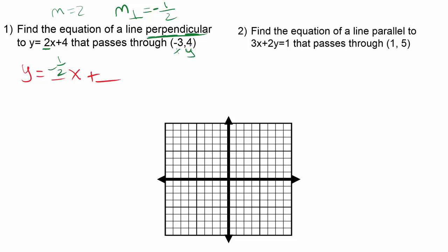And now from here, they told me a point that it passes through, so I can go ahead and fill in the y and the x and write the equation from here. So I've got 4 equals negative 1 half times 3 plus, we don't know what b is, so we'll leave that as a variable.